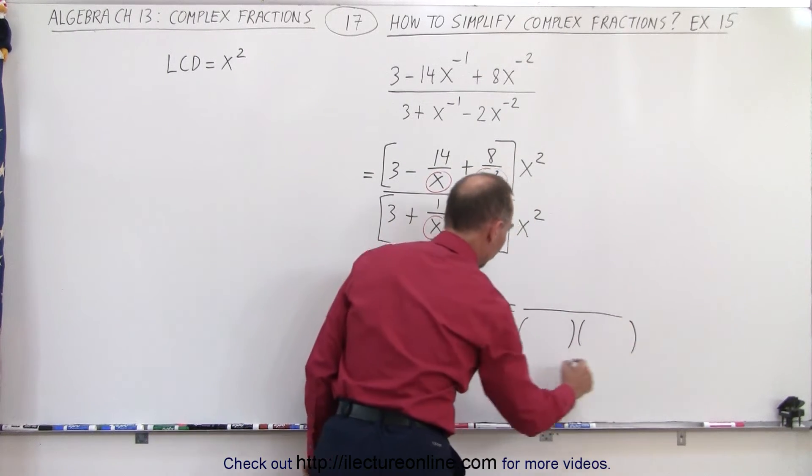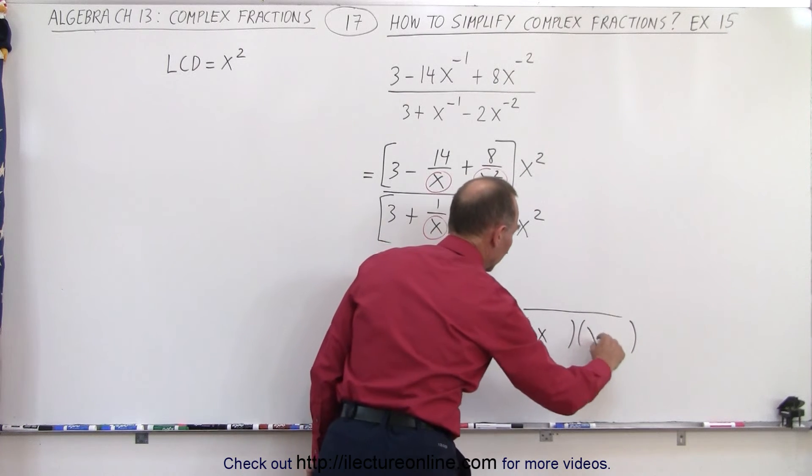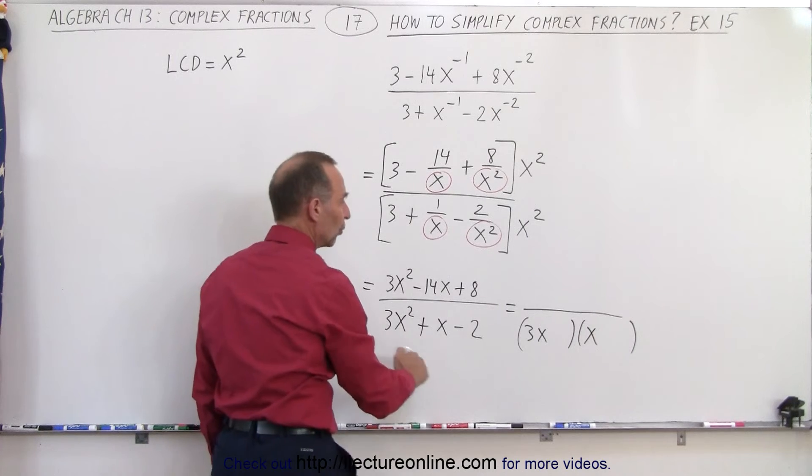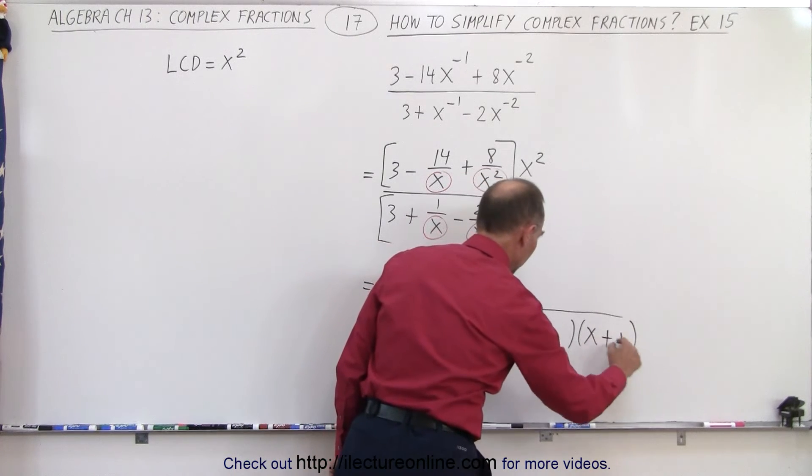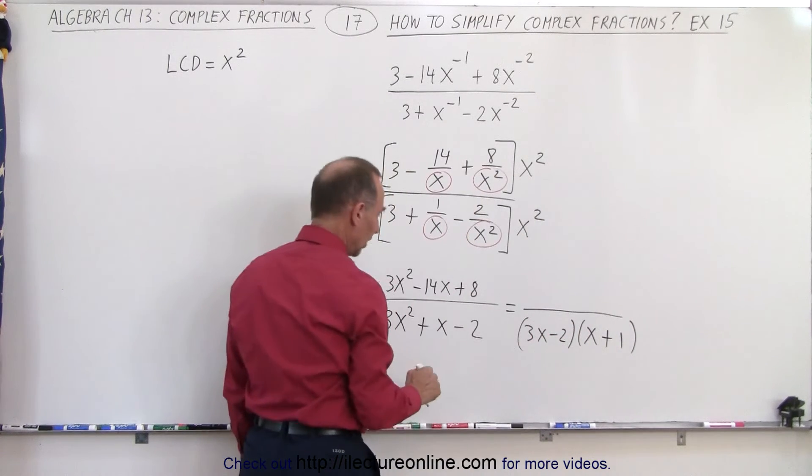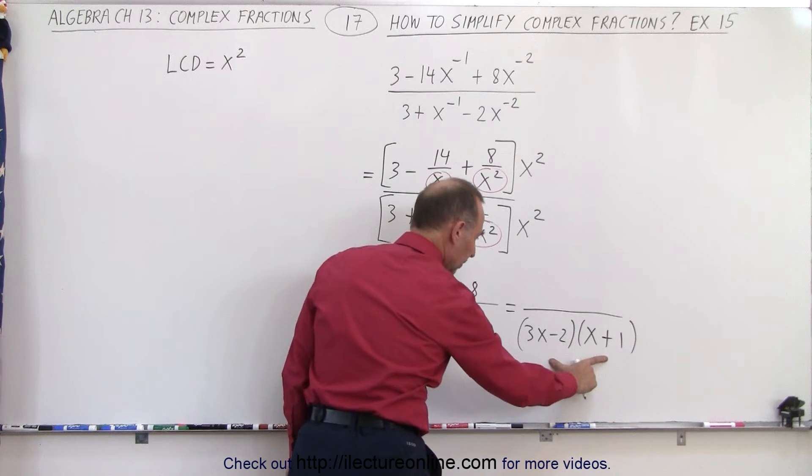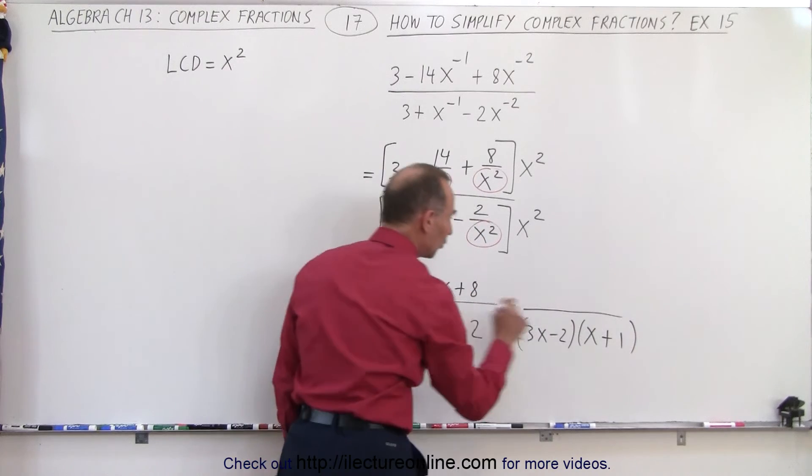So we need a 3x and an x. We need a minus 1, so this is a plus 1 and a minus 2. Notice that if I multiply these together, I get 3x squared. Minus 2 plus 3x, that's a plus x. And a minus 2.